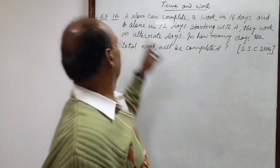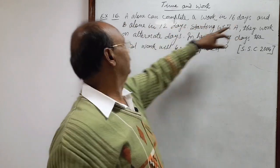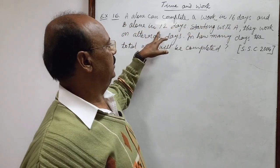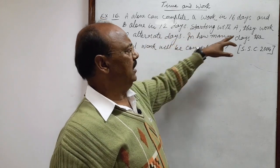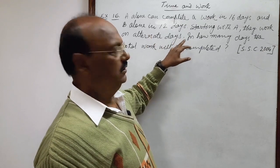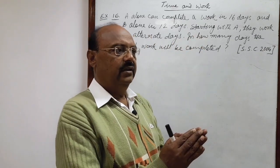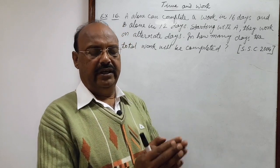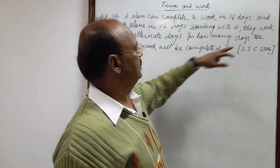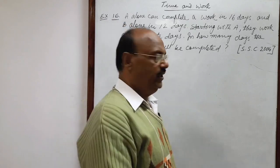Question is: A alone can complete a work in 16 days and B alone in 12 days. Starting with A, they work on alternate days. If first day A works, second day B works, in how many days the total work will be completed? Let us see the solution here.